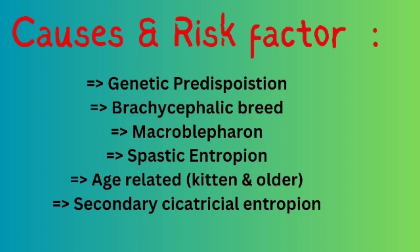All these conditions lead to blepharospasm. Another risk factor is age-related entropion, which differs between kittens and older cats. In kittens, entropion can occur due to chronic ocular surface disease — any chronic disease of the eye can ultimately lead to entropion. In older cats, entropion can occur due to retrobulbar fat loss.